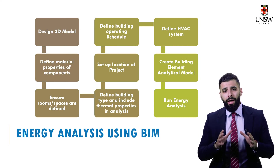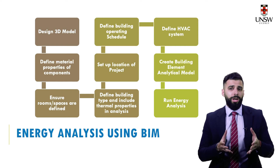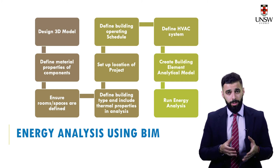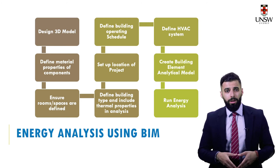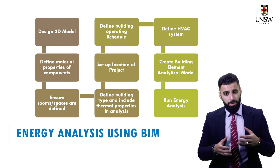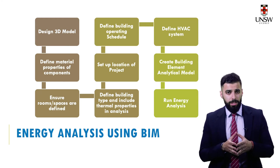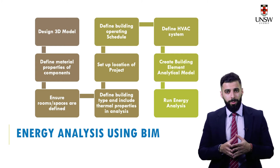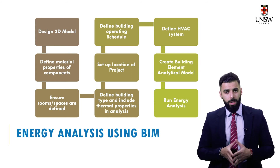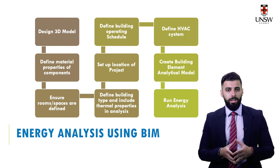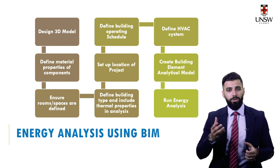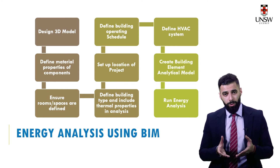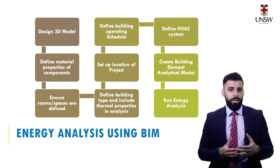Let me now demonstrate how you would conduct an energy analysis in a BIM platform. To start, you need the 3D BIM model. Next, you need to specify the material properties associated with each element in your project. You then need to define your internal spaces along with the building type — this is important because an office building will have different energy requirements compared to a restaurant or a residential building. You then need to specify the project location, since the climate and sun path in Sydney is different to that in Dubai. You also need to specify the operating hours of the building, as a building operating 24 hours will utilize more energy than one operating for only six or eight hours.